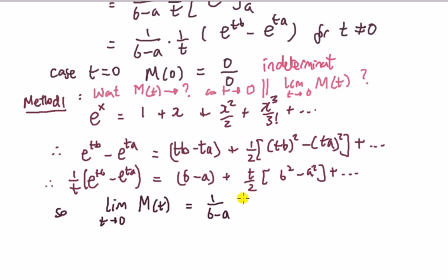times the limit, because this thing doesn't depend on t, it can come out of the limit sign. That is a rule of the limit of 1 over t. I add this thing. e to the tb minus e to the ta.